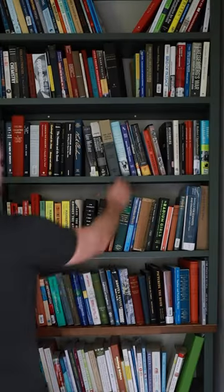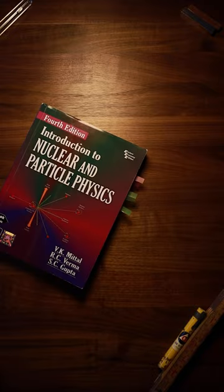This is your Oppenheimer reading list. Book number five is Introduction to Nuclear and Particle Physics by Mattel, Verma, and Gupta.